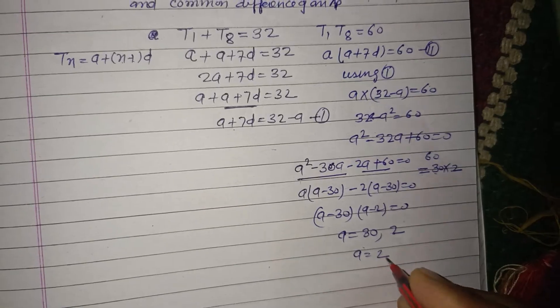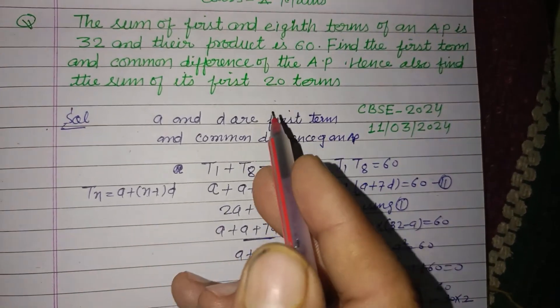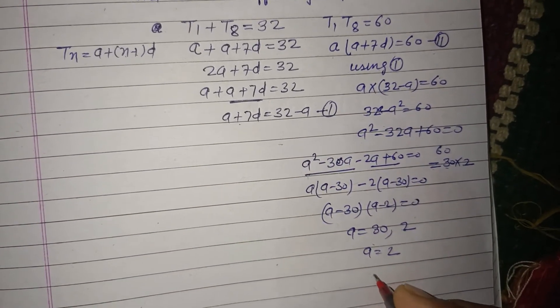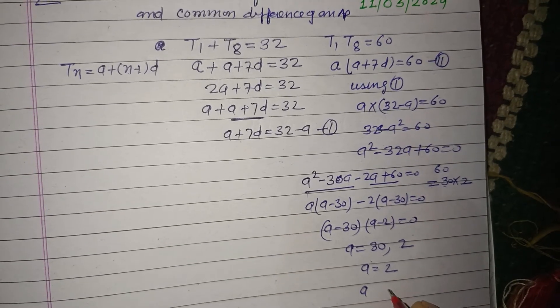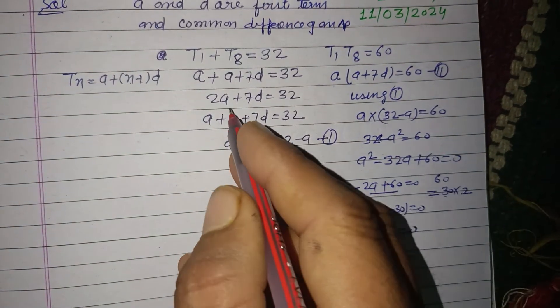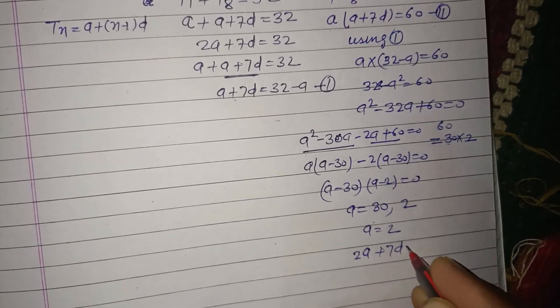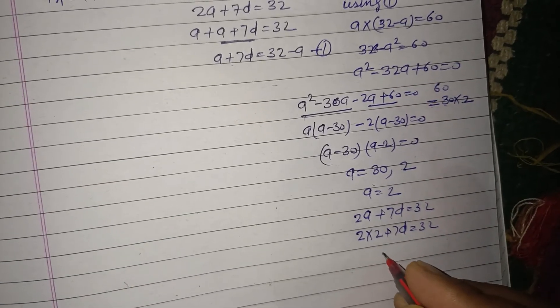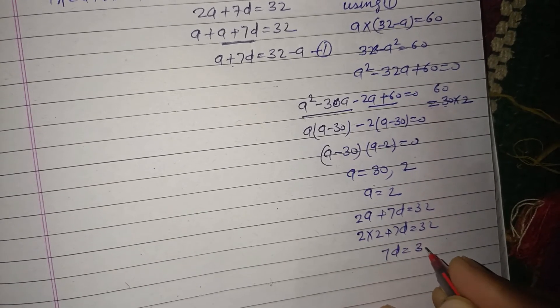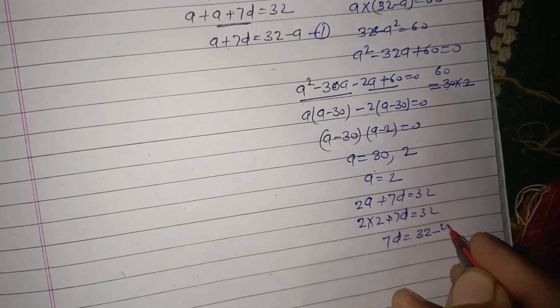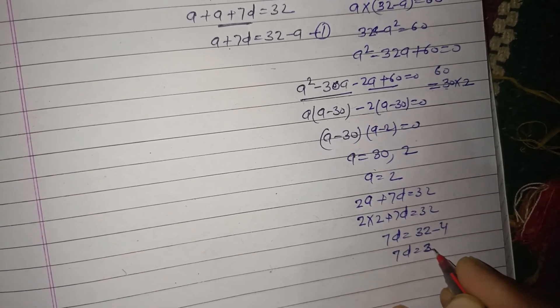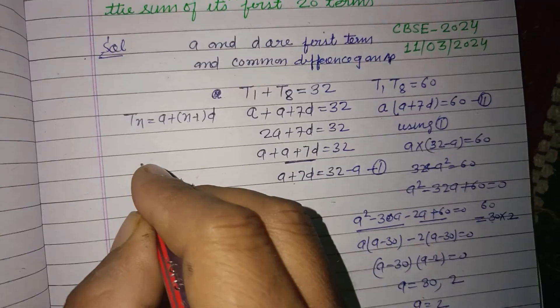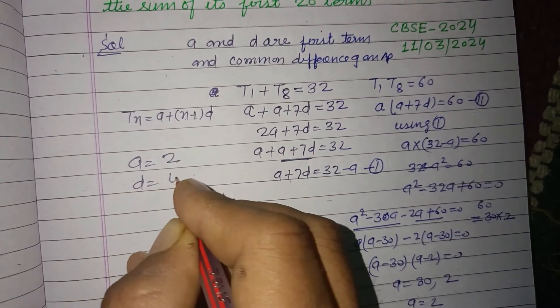So a is 2. If a is 2, then from 2a plus 7d equals 32, we get 2 times 2 plus 7d equals 32, so 7d equals 32 minus 4, which is 28, and d equals 4. So a equals 2 and d equals 4.